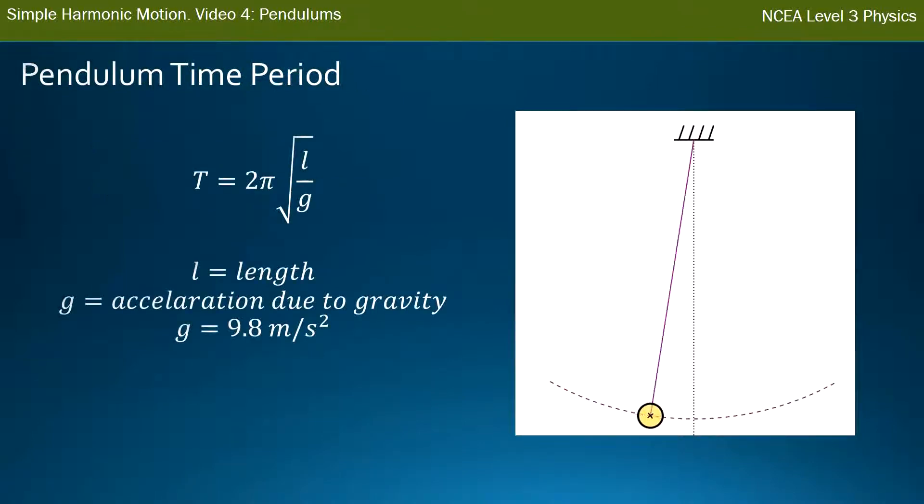So a pendulum time period looks similar in form to the mass on a spring time period formula. We have capital T represents time period. Remember, that's different than the variable time which is lowercase t. Time period is the time for one full cycle. So for a pendulum it's from, say, the left hand side there, across to the right and back to the left.